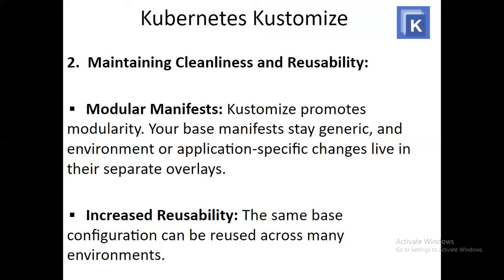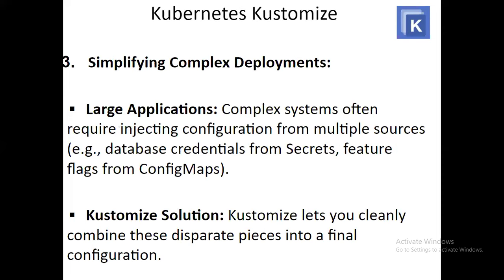The next reason is maintaining cleanliness and reusability. Kustomize promotes modularity — your base manifests stay generic, and environment or application-specific changes live in separate overlays, increasing reusability. The same base configuration can be reused across many environments. The third reason is simplifying complex deployments. Complex systems often require injecting configuration from multiple sources, for example database credentials from secrets and feature flags from config maps. Kustomize lets you cleanly combine these separate pieces into a final configuration.